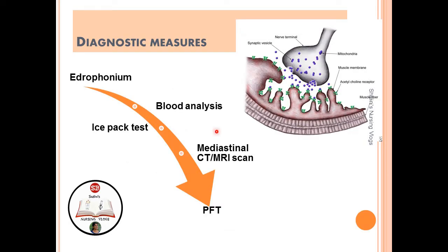Diagnostic tests include the edrophonium test, where a drug called edrophonium (Tensilon) is injected. If the patient experiences increased muscle power, it is a positive test confirming myasthenia gravis, since Tensilon inhibits acetylcholinesterase activity. Blood analysis can detect MuSK, LRP4, or anti-acetylcholine receptor antibodies. Mediastinal CT and MRI are done to rule out thymoma. Pulmonary function testing evaluates respiratory muscle weakness.